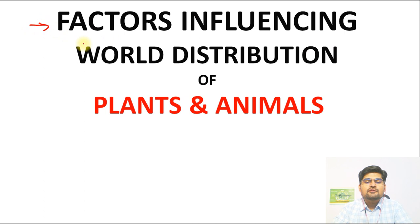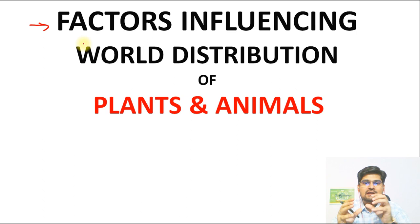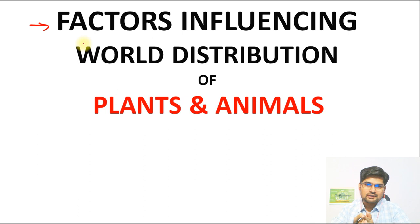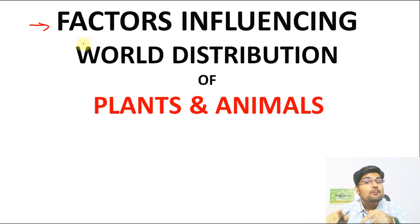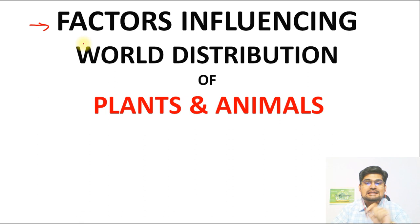Let's learn about the factors that influence the world distribution of flora and fauna, that is, plants and animals. In geography, the distribution — the chorological aspect — of any particular phenomena, be it plant or animal, is very important. We are going to discuss the world perspective and world pattern of plant and animal distribution, which is the key aspect in biogeography.